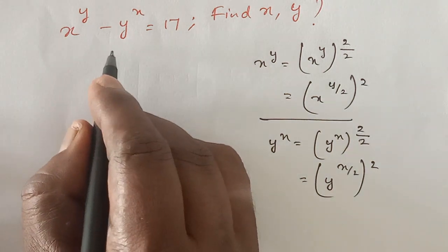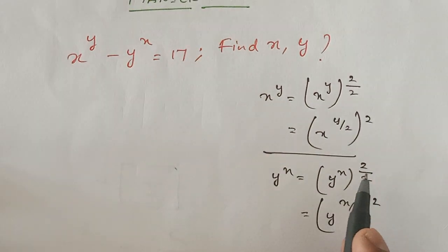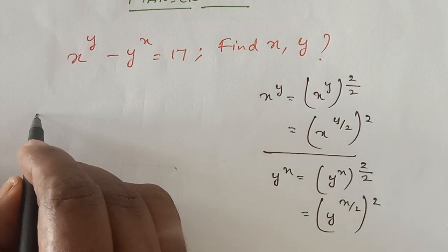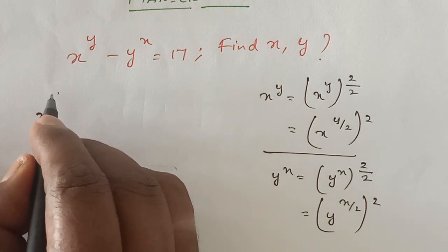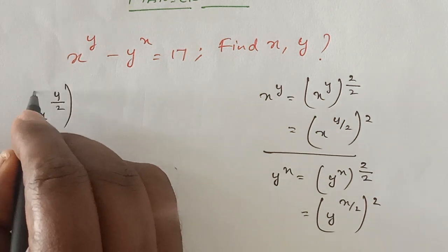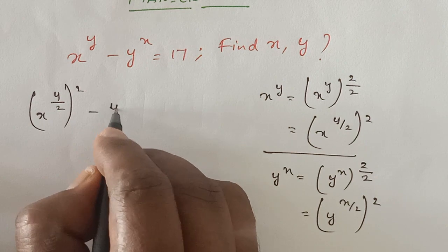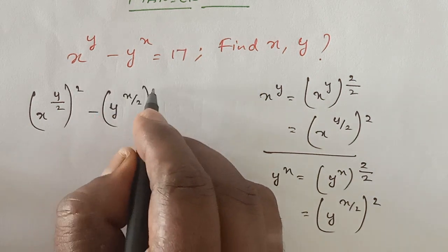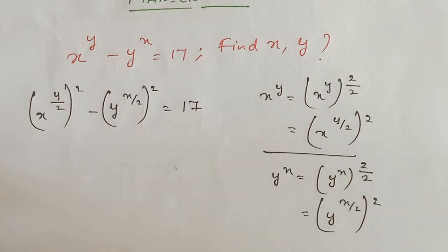So I am rewriting the given equation like in this form: (x^(y/2))^2 - (y^(x/2))^2 which is equal to 17.